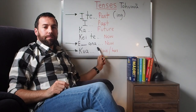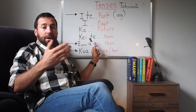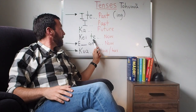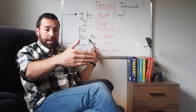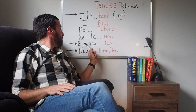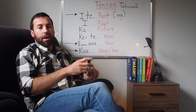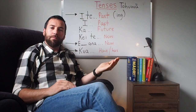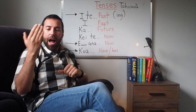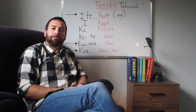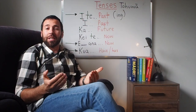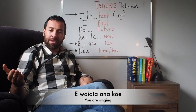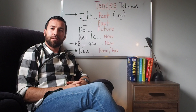E ana. The same as far as tense is concerned — present tense — as kai te. Except with kai te the verb comes at the end, but the verb in e ana sits in the middle. For example, 'You are eating': e, kai, ana, koe. And if you happen to be singing right now: e, waiata, ana, koe. Kapai.